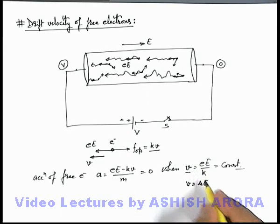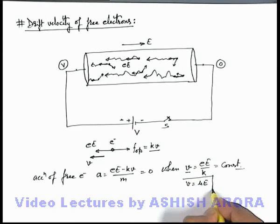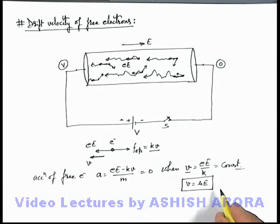Where μ is another constant which is the ratio of electron charge and constant k which we have used in finding the opposing force on electron due to collisions.